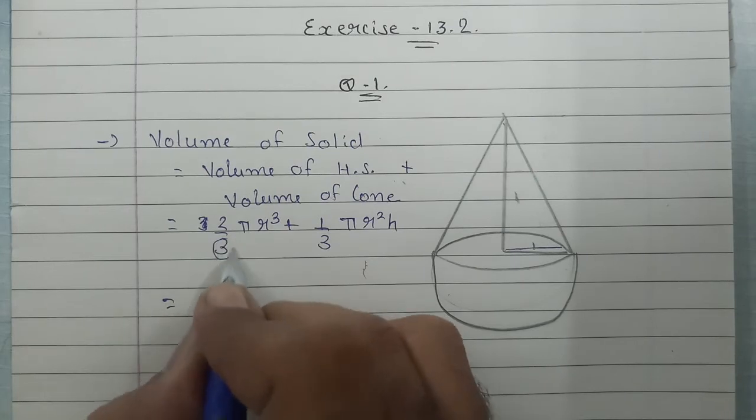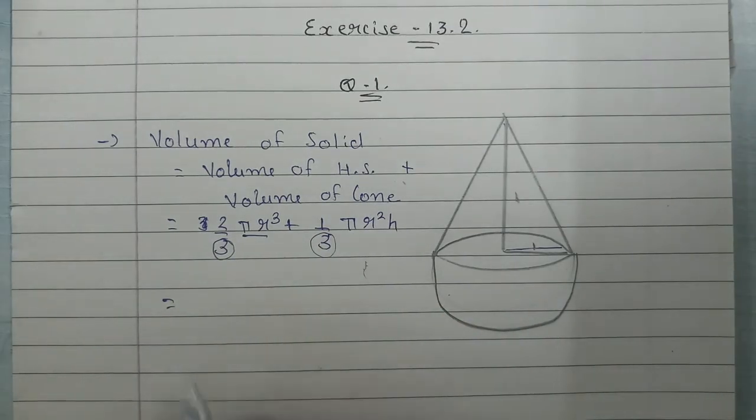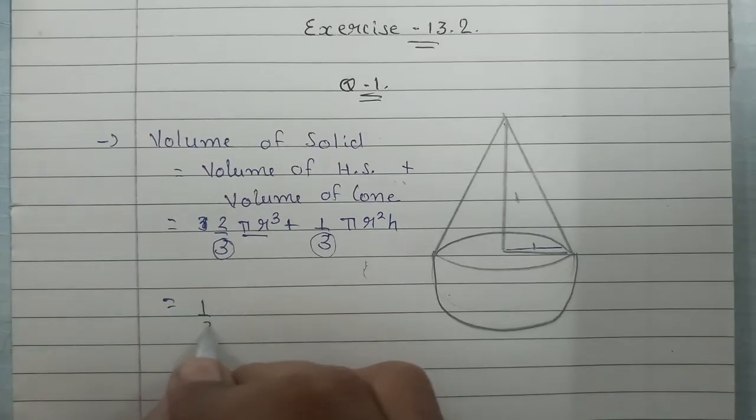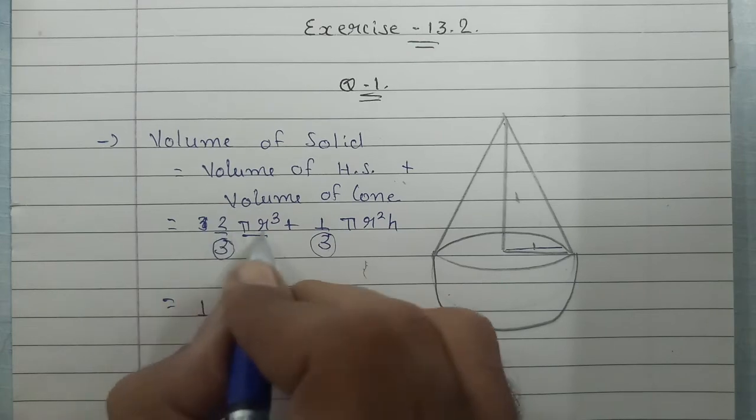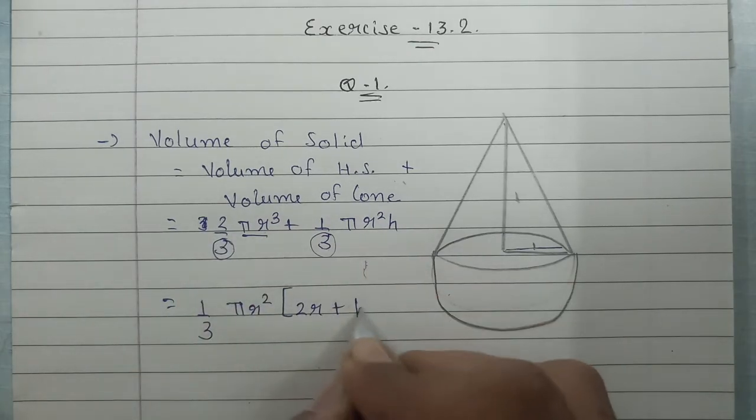From here we can take 3 and pi r squared common from the denominator. So 1 by 3 common, pi r square common, bracket me we get 2 times r plus h.